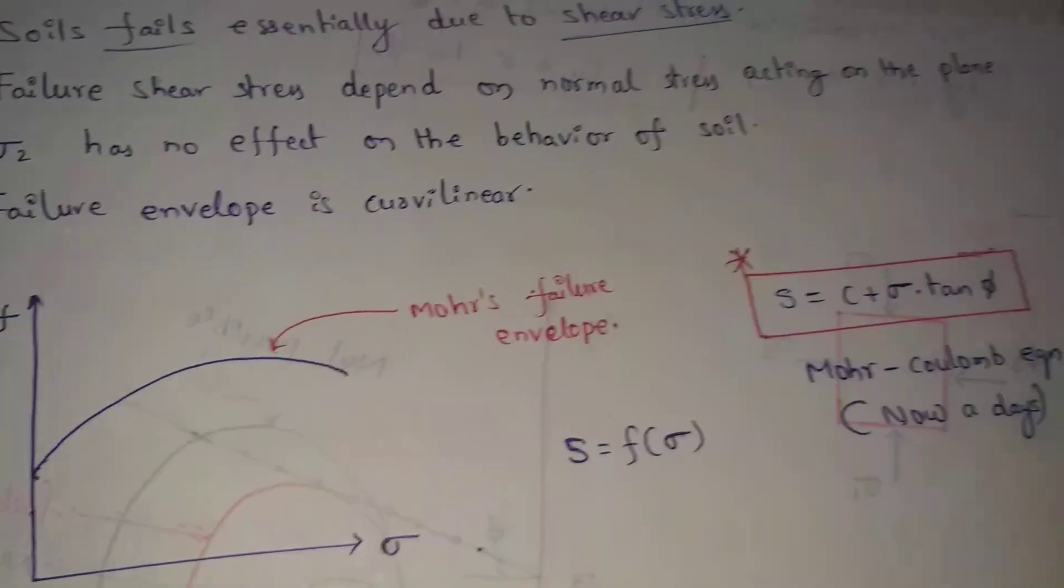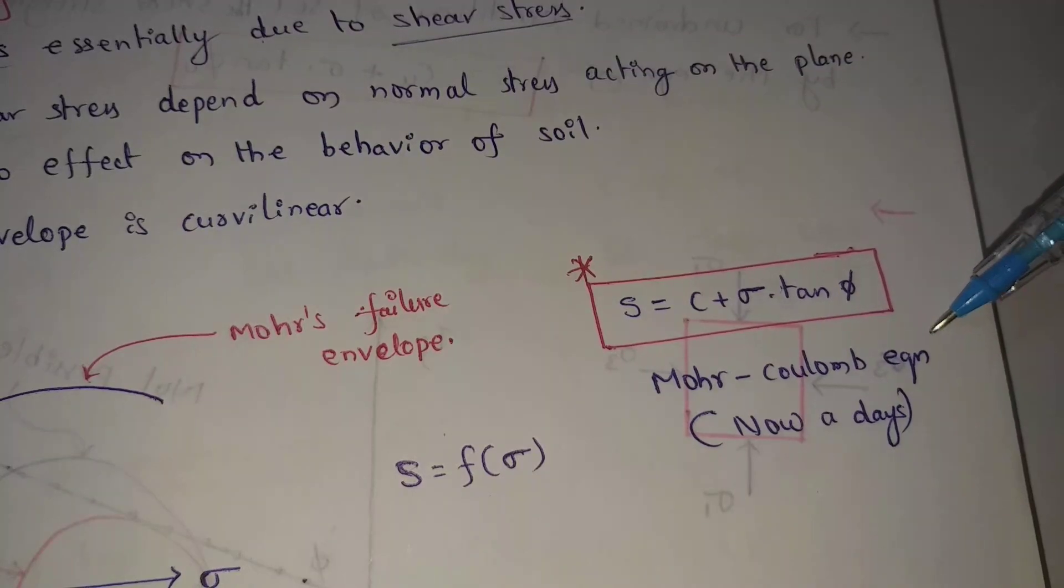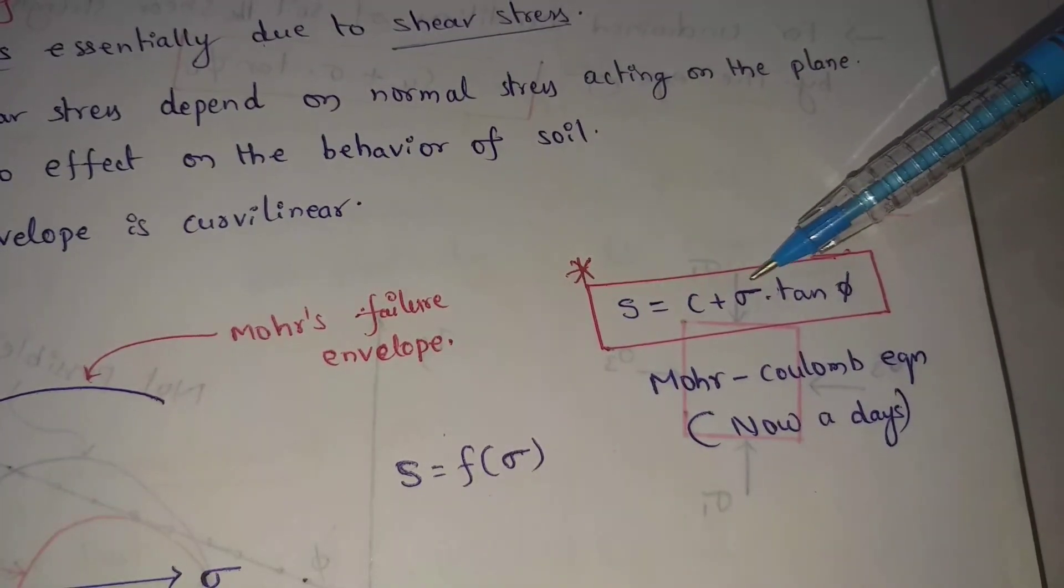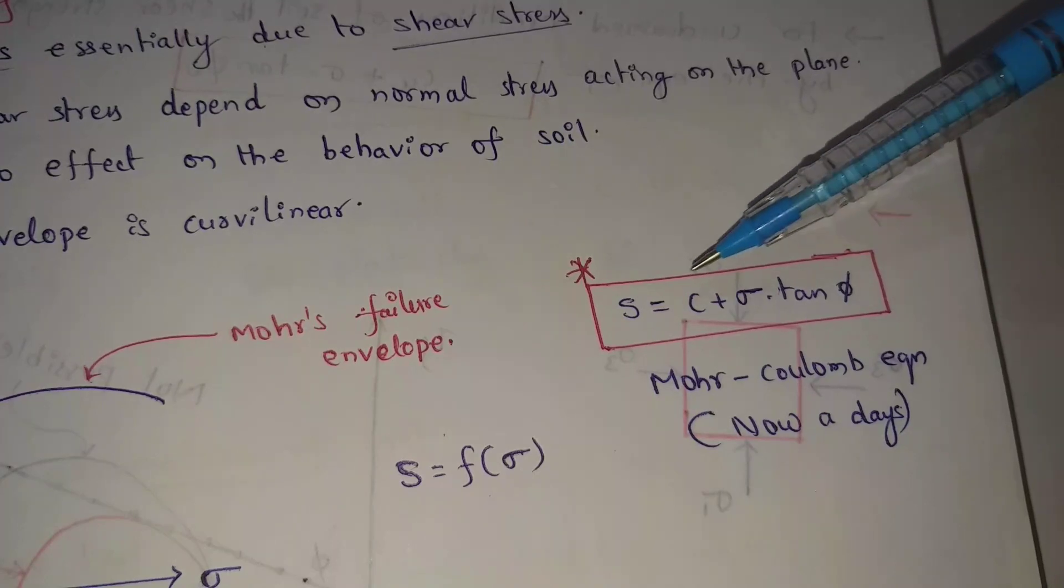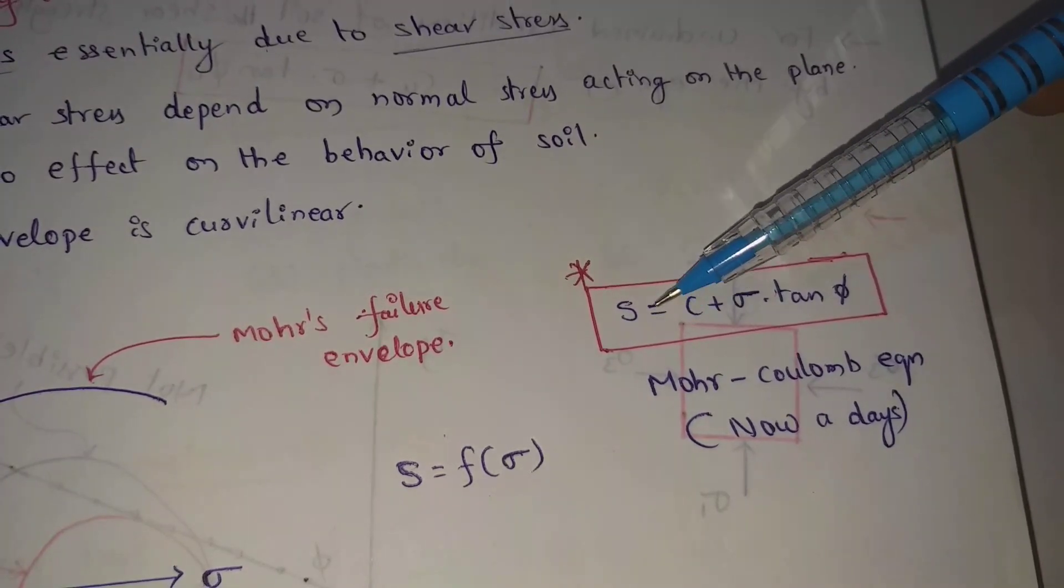This Mohr's formula, this is Mohr-Coulomb equation nowadays. s equal to c plus sigma tan phi. S means shear resistance or shear strength.